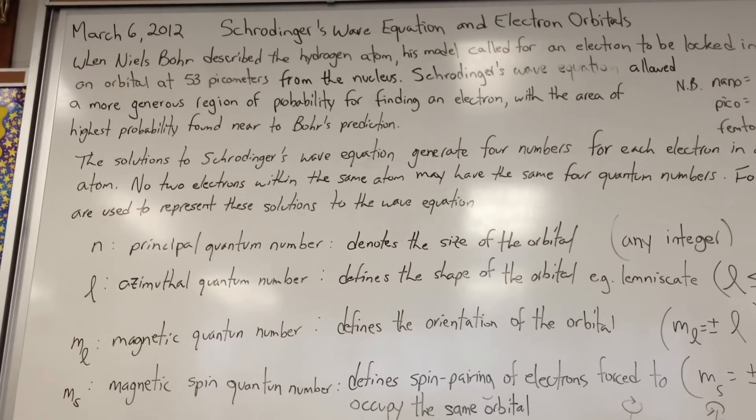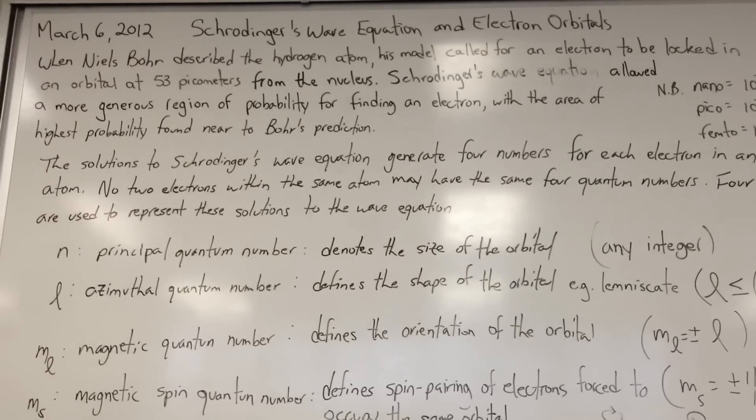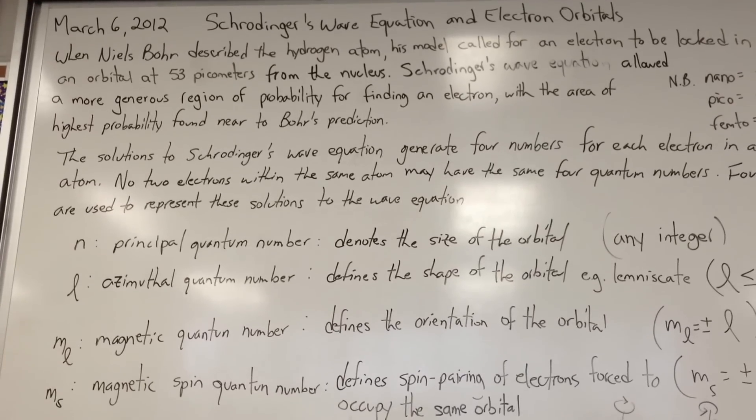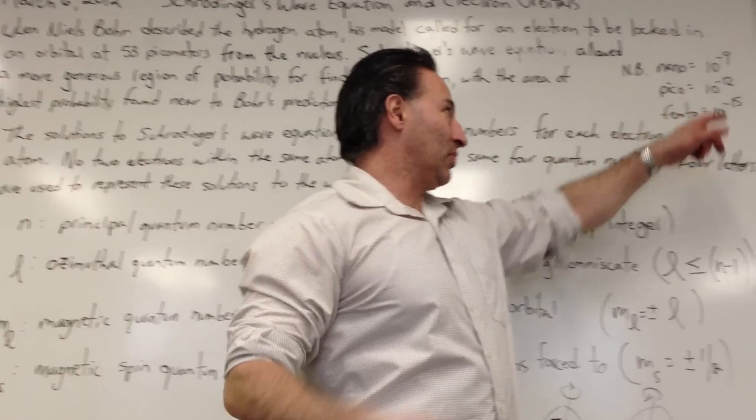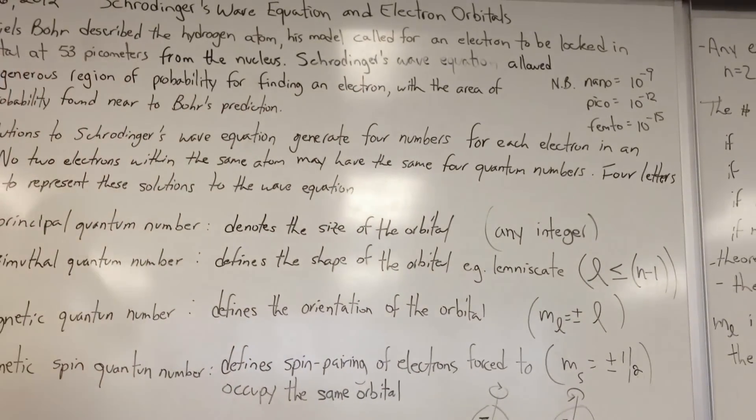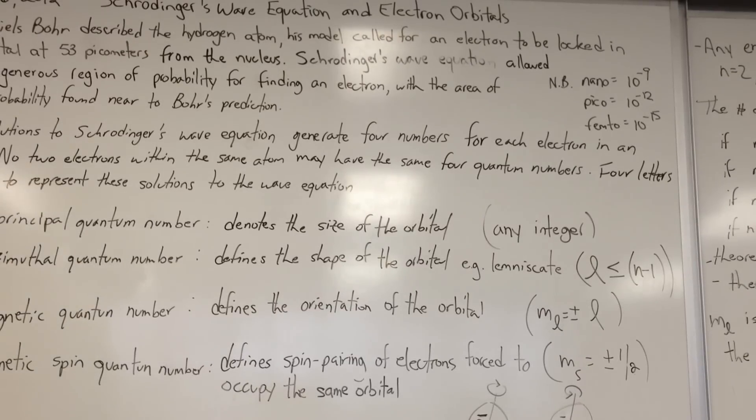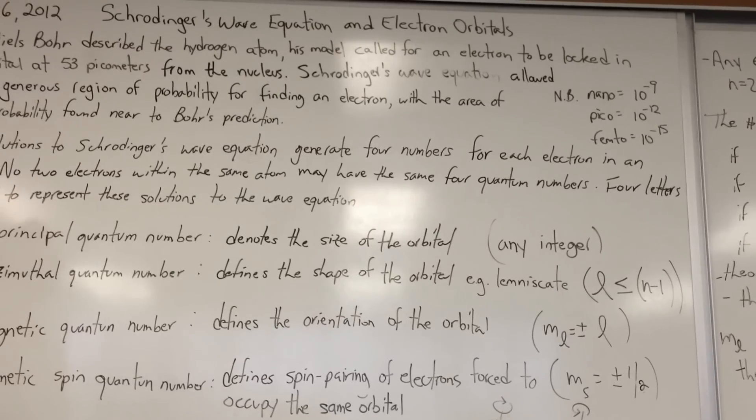When Niels Bohr described the hydrogen atom, his model called for an electron to be locked in an orbital at 53 picometers from the nucleus. 53 picometers being 10 to the minus 12, 1 picometer is 10 to the minus 12 meters, so 1,000 picometers equals 1 nanometer, and 1,000 femtometers equals 1 picometer.